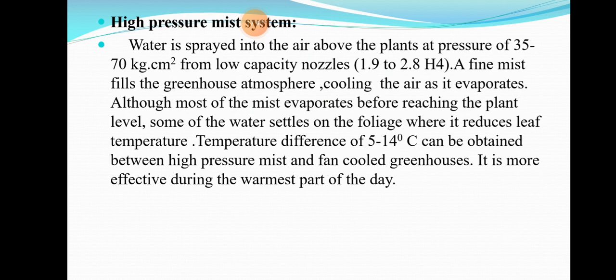A fine mist fills the greenhouse atmosphere, cooling the air as it evaporates. Although most of the mist evaporates before reaching plant level, some water settles on the foliage where it reduces leaf temperature. A temperature difference of 5 to 14 degrees centigrade can be obtained between a high pressure mist and a fan-cooled greenhouse. It is more effective during the warmest part of the day.